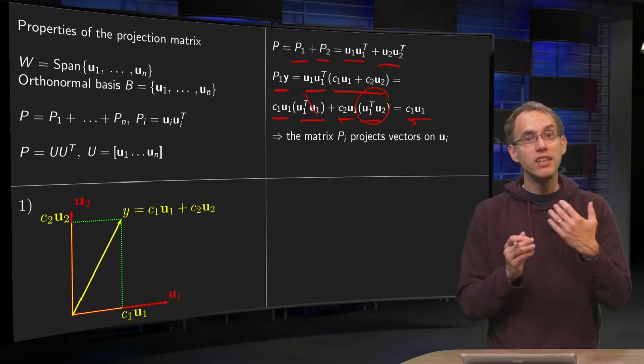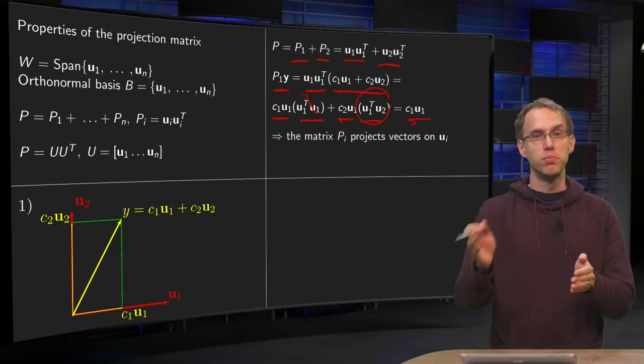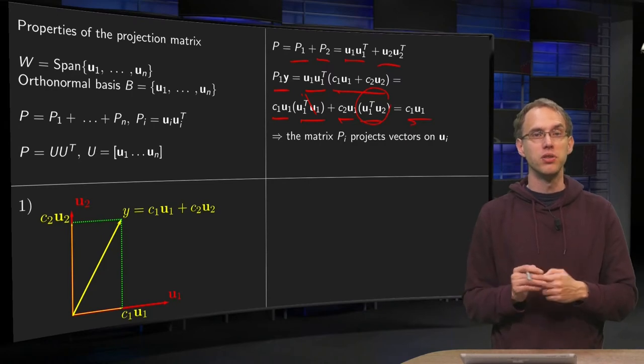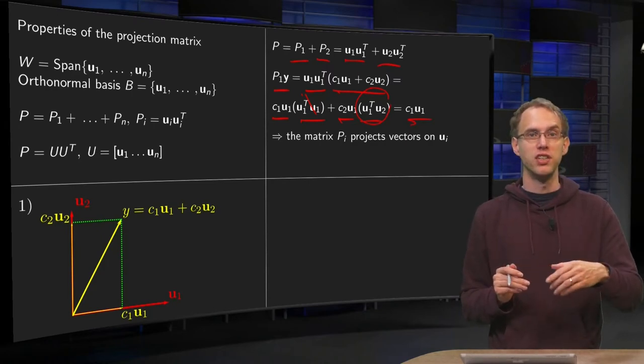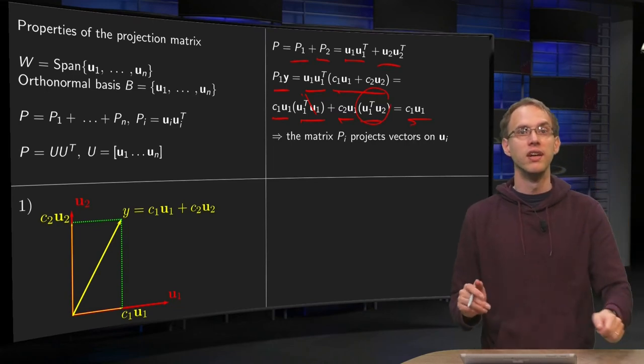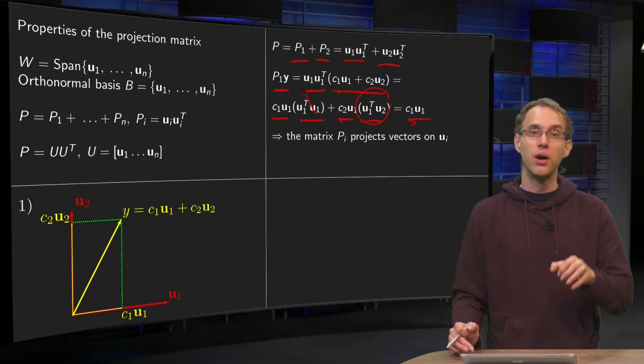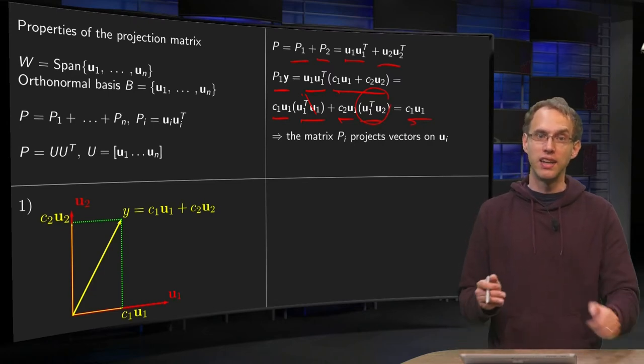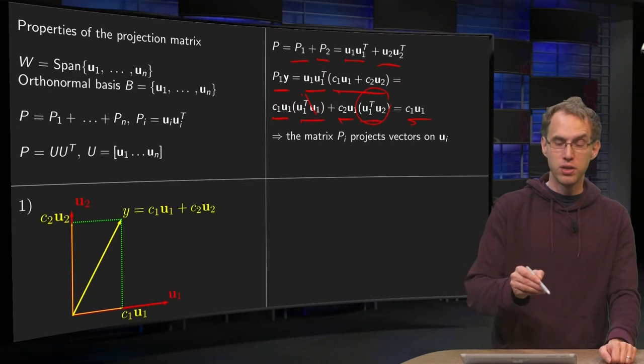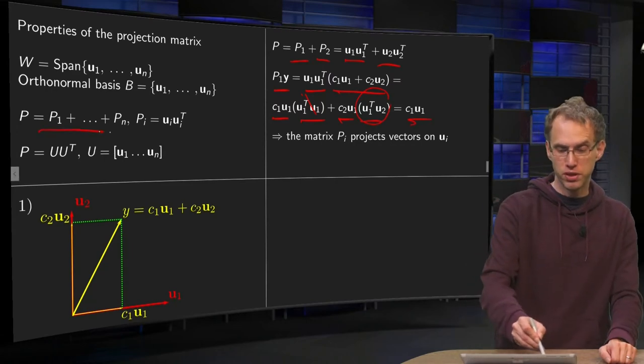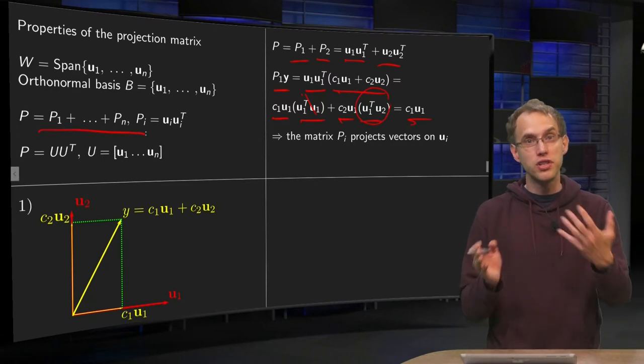This way of writing your projection matrix as P1 plus P2 up to Pn means that you write it as a sum of matrices that project on U1, on U2, on U3, and so on. These P1, P2, and so on have a very clear interpretation as projection matrices on the single basis vectors. That's why it's a nice way to write P as a sum of those projection matrices on the separate vectors.